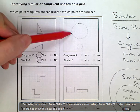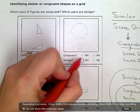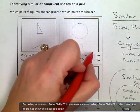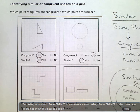These two are the same shape, so they're similar, but they're not the same size. So, they're not congruent. These two are both the same shape, so they're similar and the same size. So, they're also congruent.